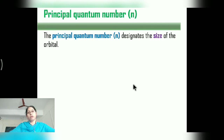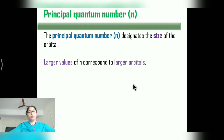Let us study in detail. First, the Principal Quantum Number designates the size of the orbital. If the principal quantum number N is larger, then the size of the orbital is larger. So N is directly proportional to the size of the orbital.